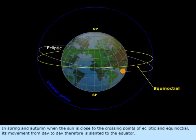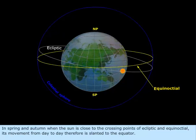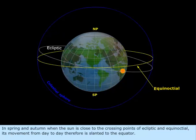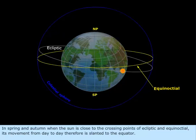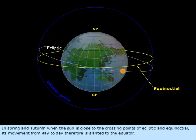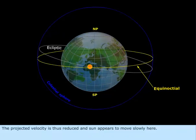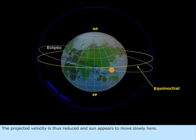In spring and autumn, when the Sun is close to the crossing points of ecliptic and equinoctial, its movement from day to day therefore is slanted to the equator. The projected velocity is thus reduced, and the Sun appears to move slowly here.